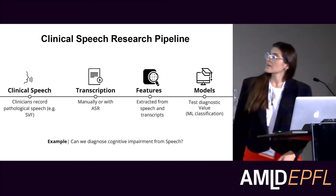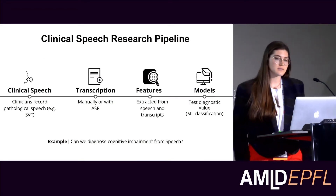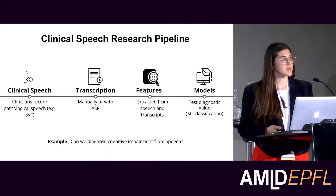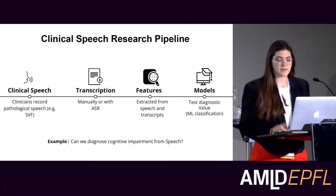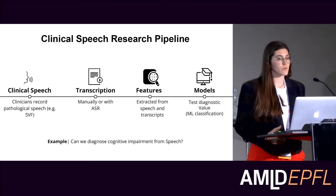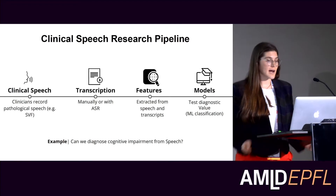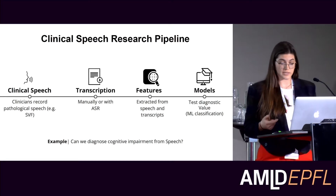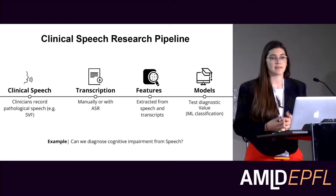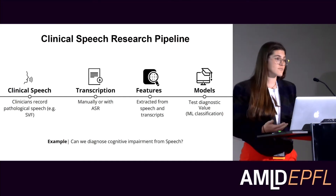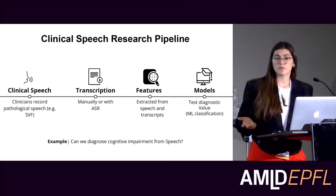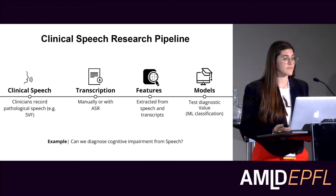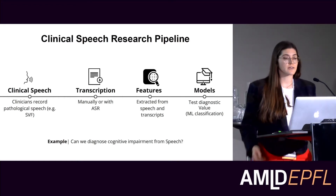We typically start with a clinical speech research pipeline that looks something like this. A clinician goes and collects some speech — typically pathological data, more like a clinical task, not open-ended free speech. This gets transcribed either manually or with automatic speech recognition, and then we extract features either from the voice signal or from that transcribed data. Usually features that clinicians are interested in. Then we have a downstream application where we try to build a machine learning model — for example, can we diagnose cognitive impairment or dementia from speech over the phone.